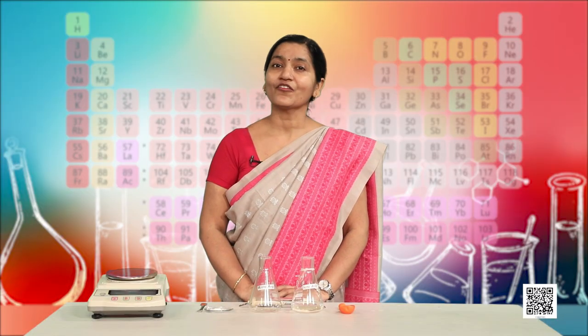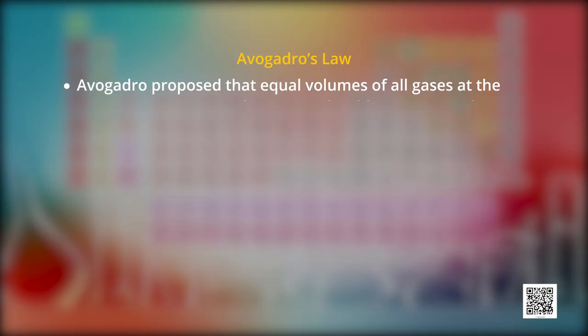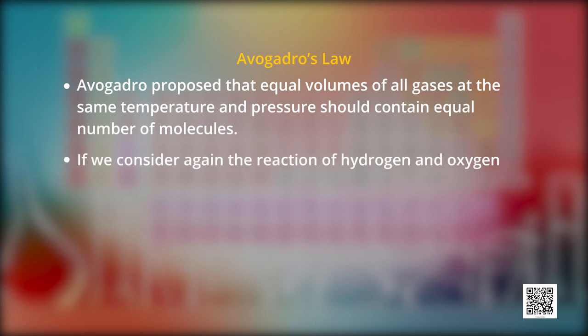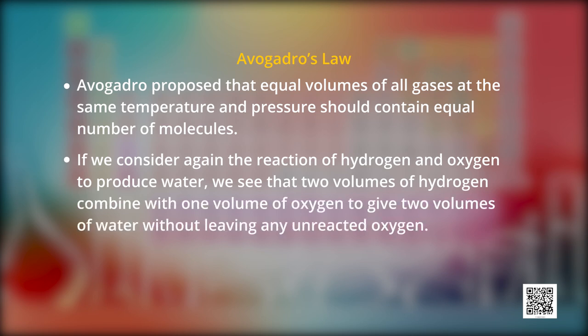Another law of chemical combination is Avogadro's law, which gives a relation between the volume of gas and number of molecules. According to this, equal volumes of all gases at the same temperature and pressure should contain equal number of molecules. Considering the same reaction H₂ + O₂ → H₂O, two volumes of hydrogen combine with one volume of oxygen to give two volumes of water without leaving any unreacted oxygen.